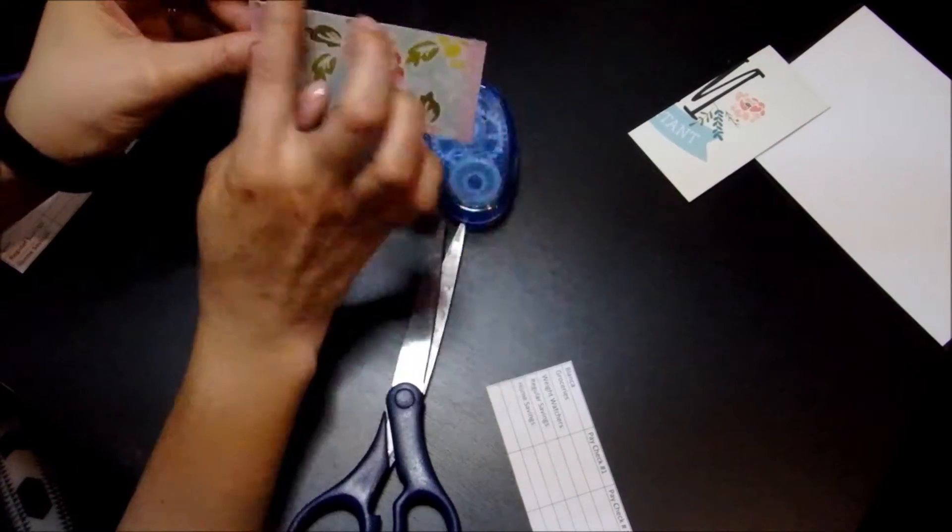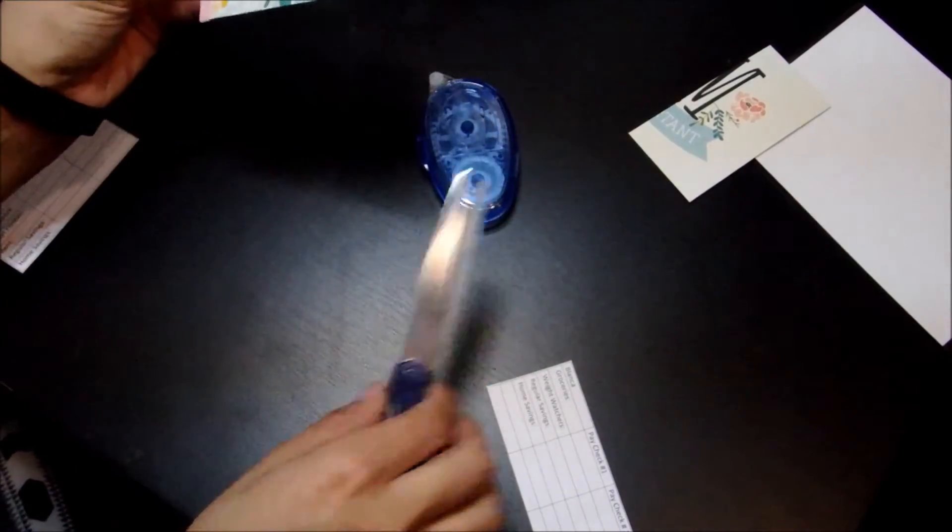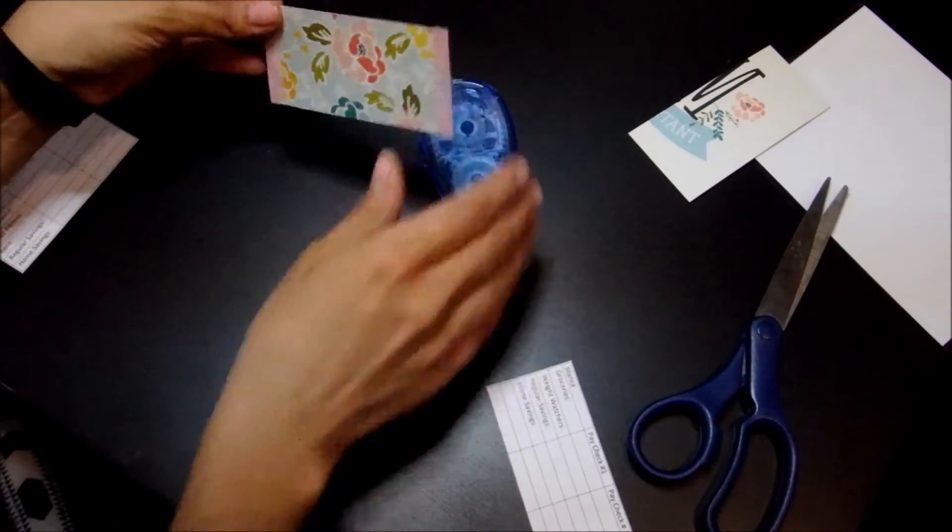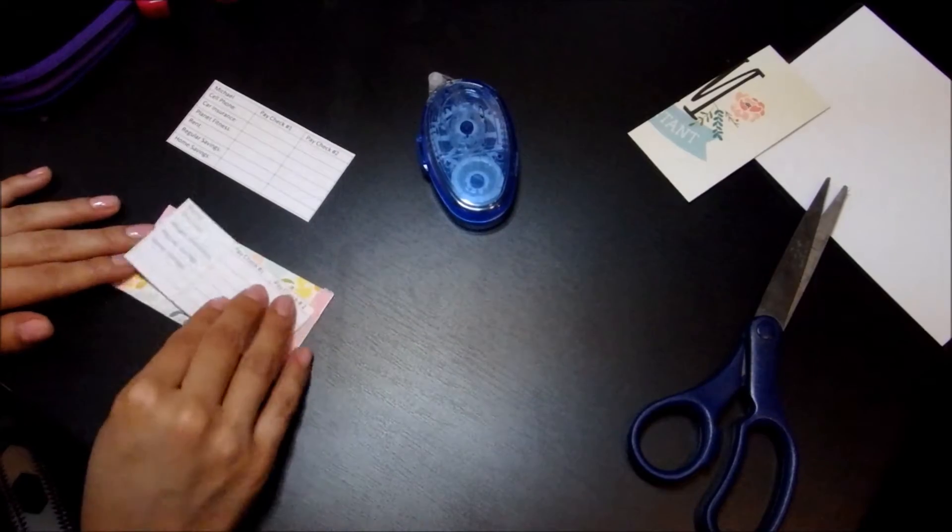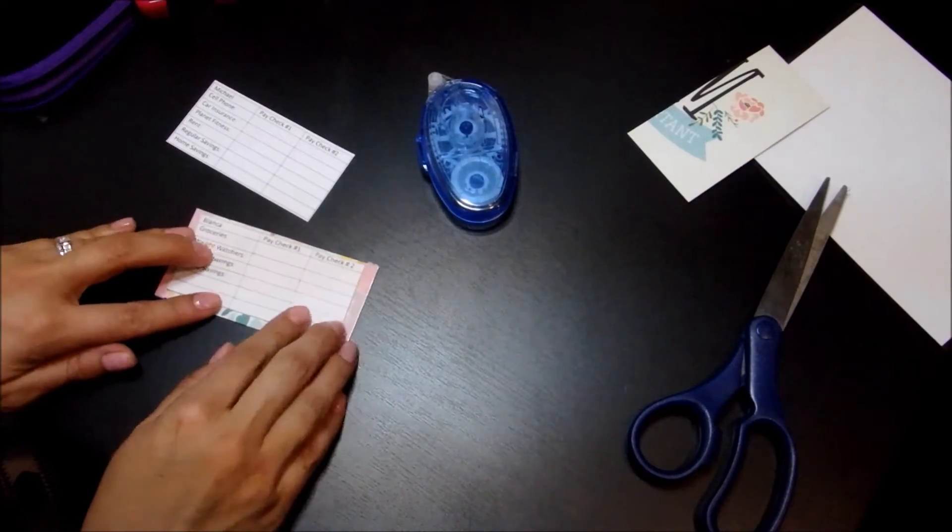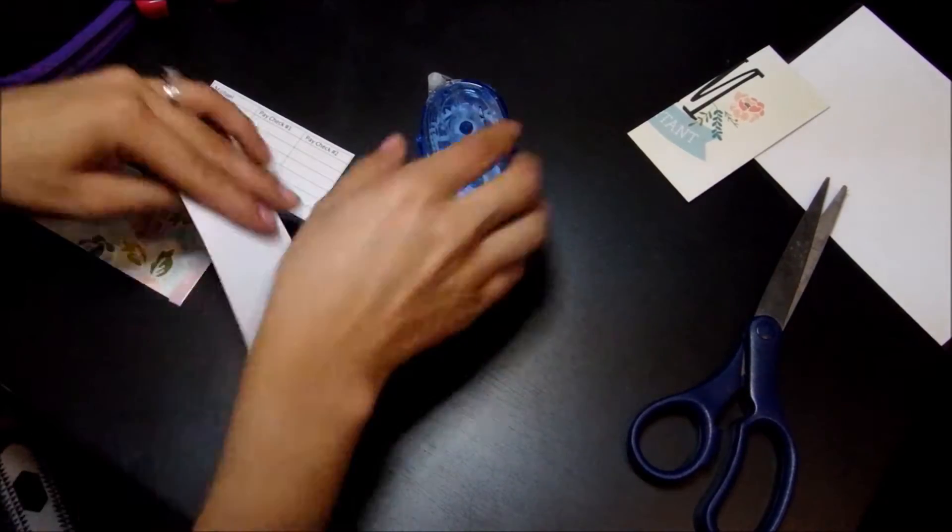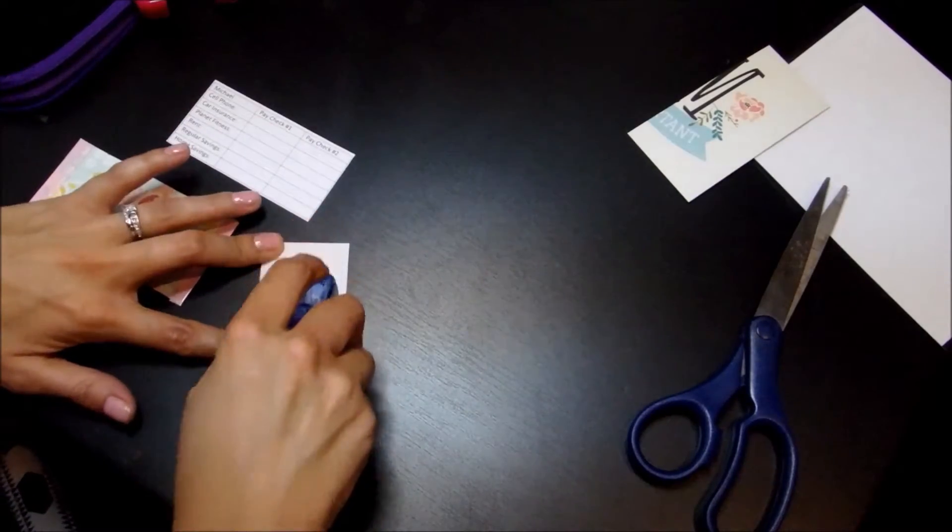Now I decided to just do the ends and leave the top as it is. That way we can see a little bit of that floral print once we put the sheets in. So first I'm going to put mine and then I will put Michael's. So all you're going to do is just lay it on top with some tape or glue, whatever you have.